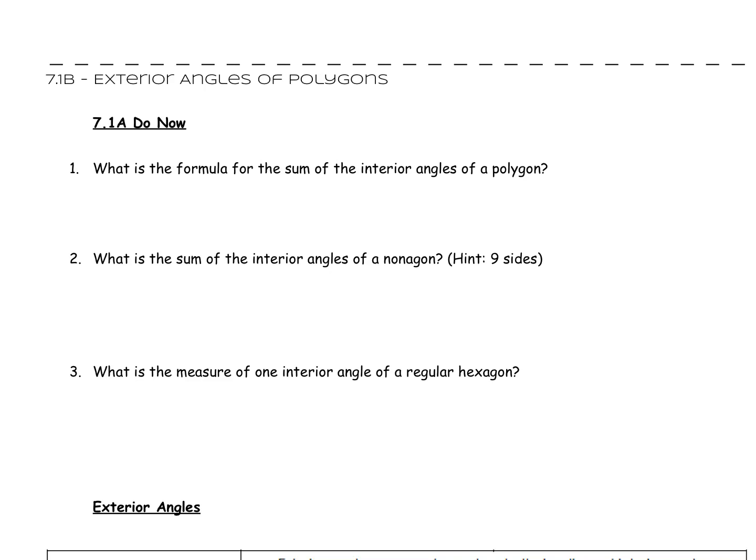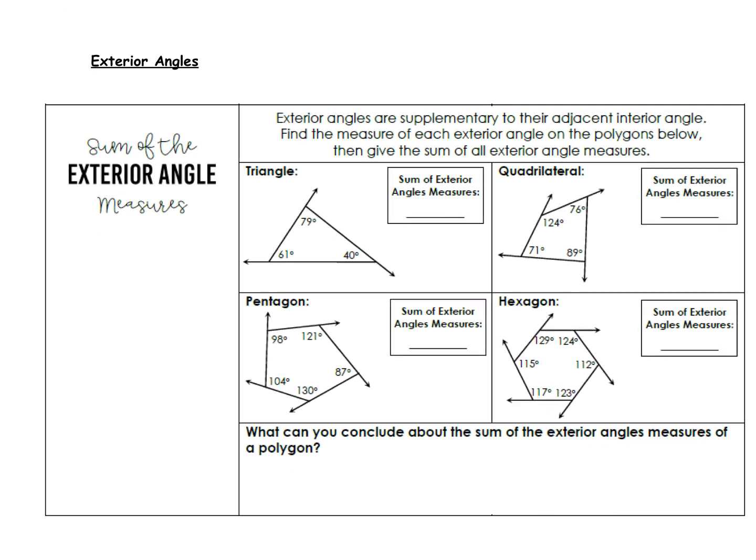Alright, so in our second session, second section of notes in chapter 7, we're going to talk about the exterior angles of polygons. If you have not done so, I really would like you to try to figure out the three questions to 7.1a do now. The first one being, what is the formula for the sum of the interior angles? If you can't quite remember that one, look back to your notes. I want you to try these problems on your own. If you're already done with the 7.1a do now, then we're going to go ahead and get started with today's notes.